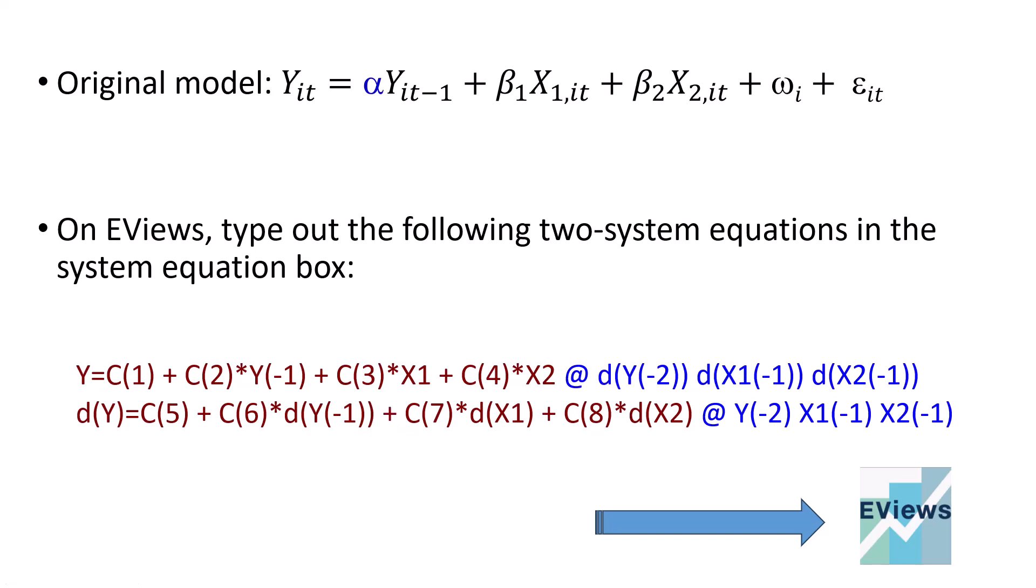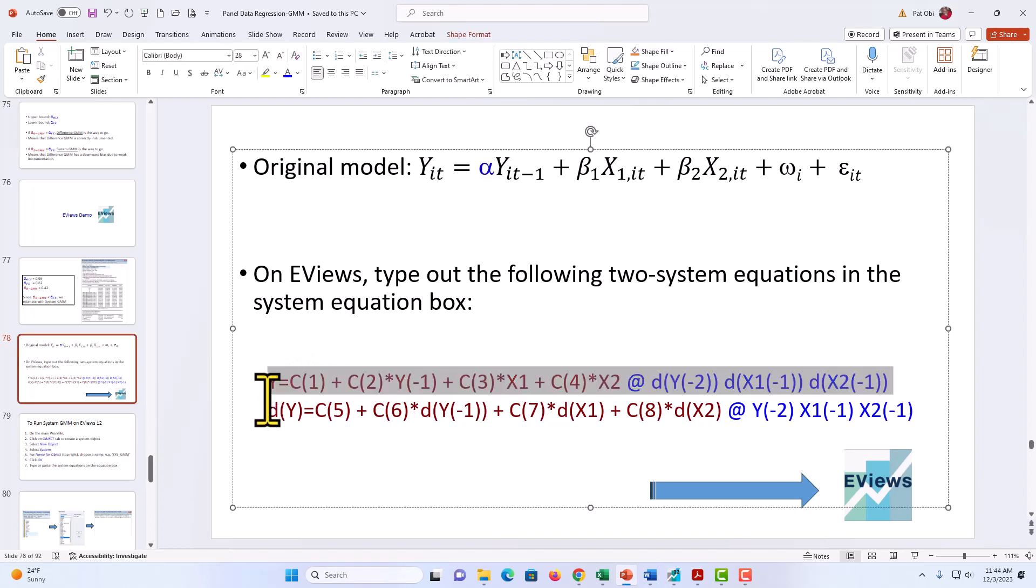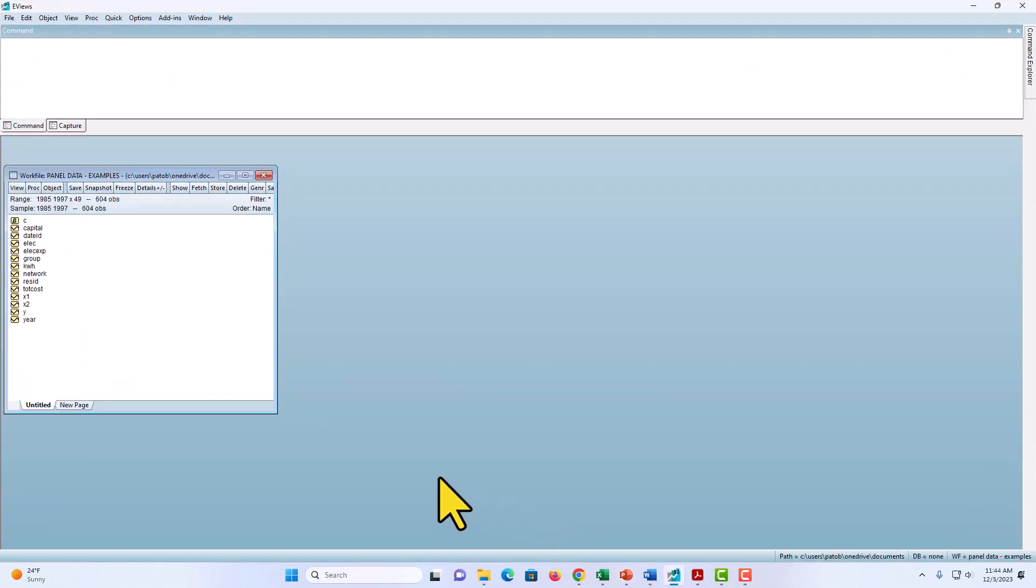But to do so, we're going to have to first of all copy out our two system equations right here, all right, because we're going to paste it on the equation box on eViews to make things nice and easy for us. So now I head out to my eViews, and here I have my panel dataset with 49 groups. And as you can see, this fulfills the requirements that the number of groups must exceed the number of time periods here measured in years.